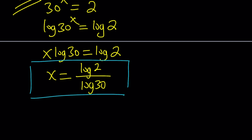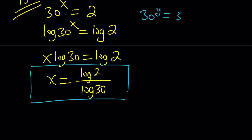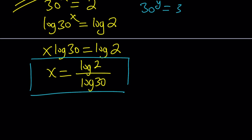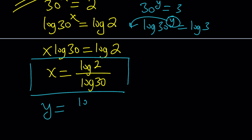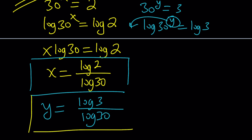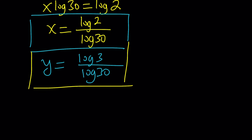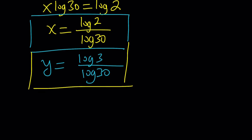We also have 30 to the power y is equal to 3. If we do the same thing — log both sides, bring the y to the front, and divide by log 30 — we get y equals log 3 over log 30. So these are two numbers written as fractions with the same denominator, which will be useful shortly.